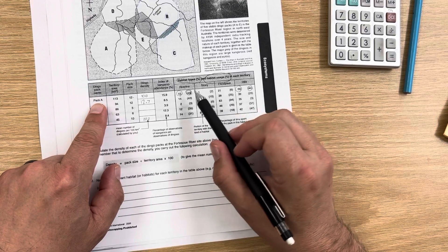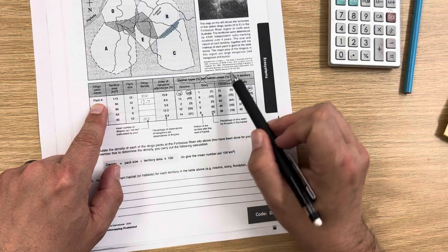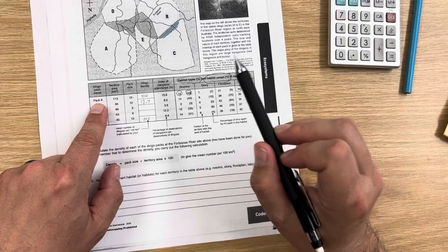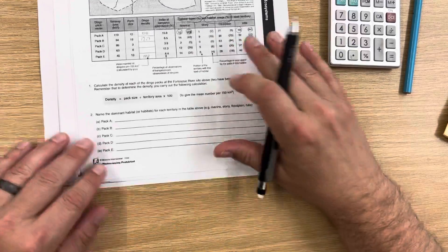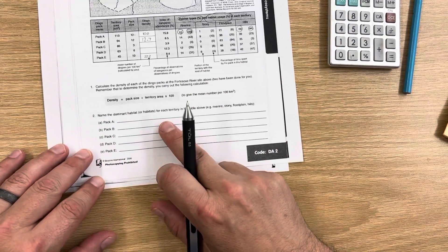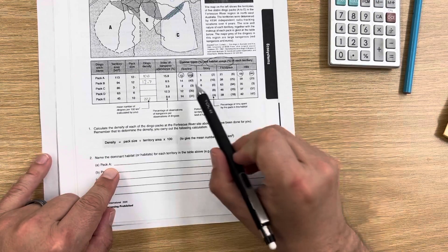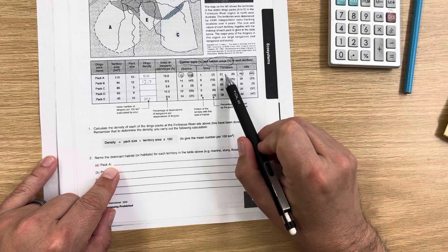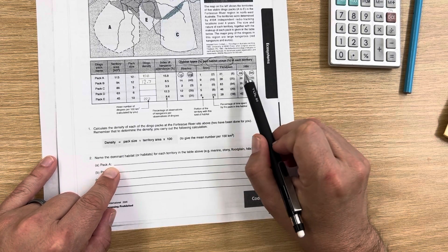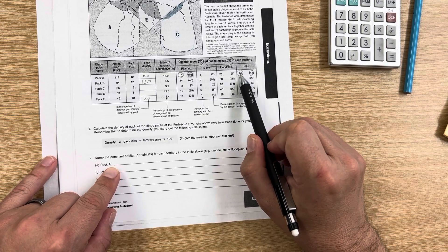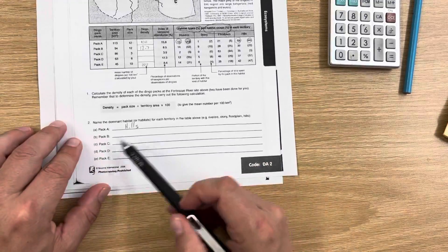That's going to help you answer some questions later. So habitat type is just how much of it there is in the territory. Habitat use is how often the dingoes use that area. Down here, it's going to ask you what are the dominant habitats. So for pack A, we already said that 10% riverine, 1% stony, 21% floodplain. So the most dominant just by type is hills. So I'm just going to write hills here. And you'll do that with each of the other packs.